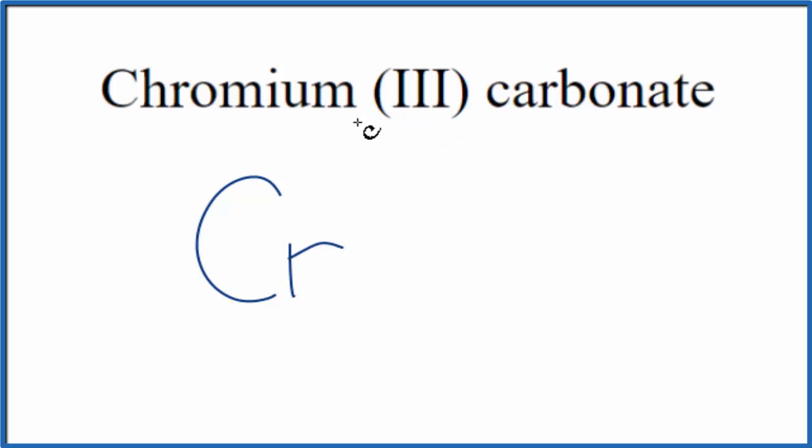And we know when we look at the formula here, this Roman numeral 3, that tells us we have a 3 plus ionic charge. Chromium, that's a transition metal, so they put the 3 here to help us out.